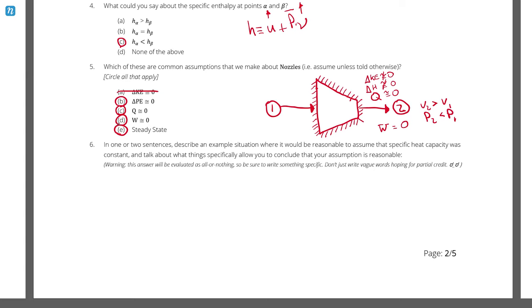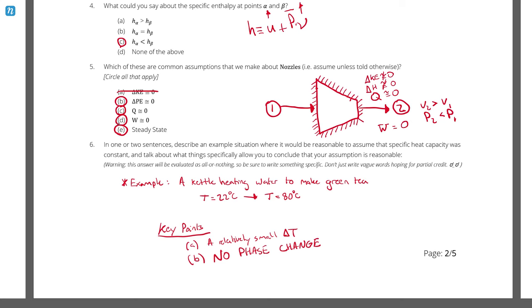Question number six. In one or two sentences, describe an example situation where it would be reasonable to assume that the specific heat capacity was constant and talk about what things specifically allowed you to conclude that the assumption was reasonable. The key points I was looking for were that the substance had a relatively small temperature change and that there was no change in phase. So we could say, well, maybe a kettle heating water to make tea. Let's say that the kettle was heating water to make green tea. So green tea is optimally brewed at 80 degrees Celsius. So if we assume that it started at room temperature, then going to a temperature of 80 degrees Celsius, that represents a relatively small temperature change and no phase change. And that's the multiple choice questions.